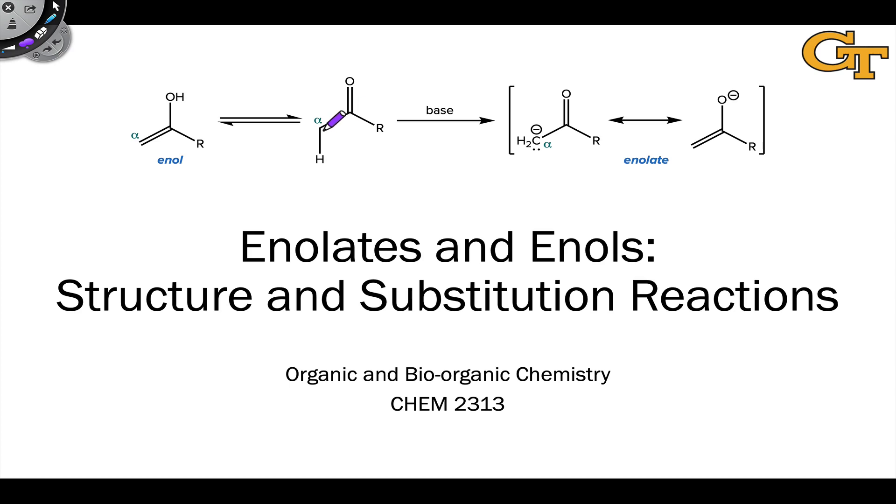A carbon linked to a carbonyl group is referred to as an alpha carbon. The alpha carbon of carbonyl compounds is relatively acidic because of the electron withdrawing nature of the carbonyl group. Deprotonation of the alpha carbon leads to the formation of the conjugate base of a carbonyl compound, and this type of structure is referred to as an enolate.